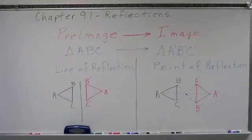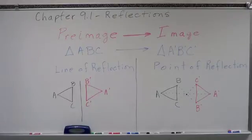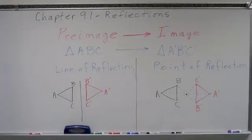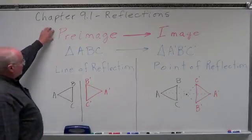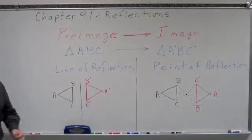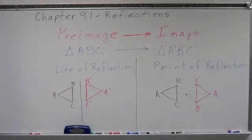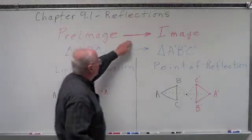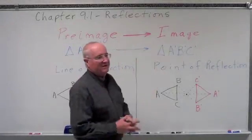Another item we need to visit when we talk about transformations is there's a change that takes place in all these transformations — reflections, translations, rotations, dilations — and so we're going to have different images. What we always call our first image is the pre-image: before the change. Then we go through a change and we have an image.